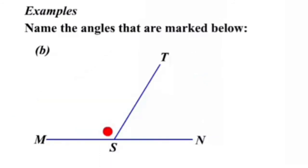Let us see one more example. In this figure, we have to name the angle which is marked. This angle here can be named angle MST or angle TSM.